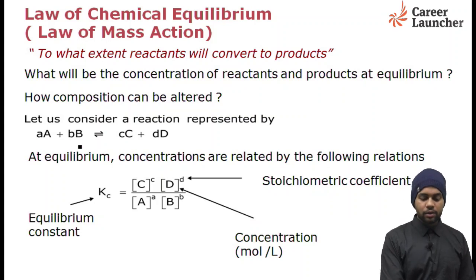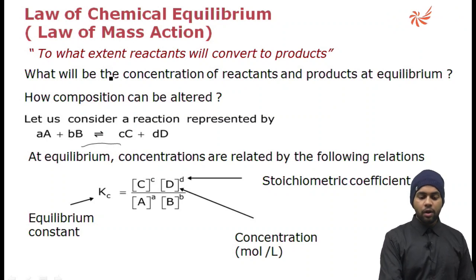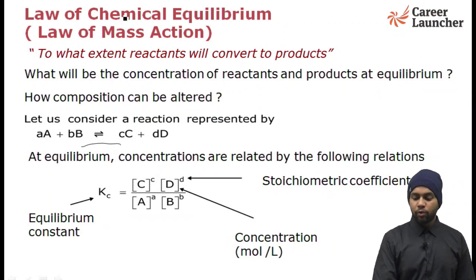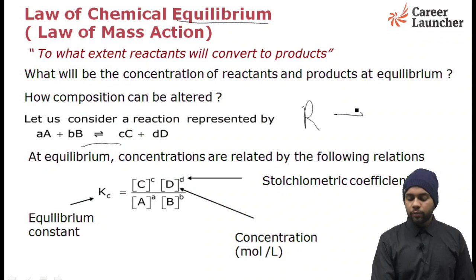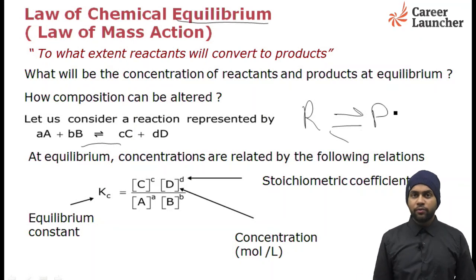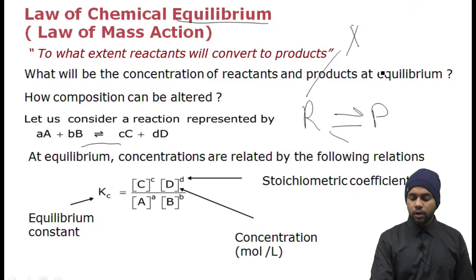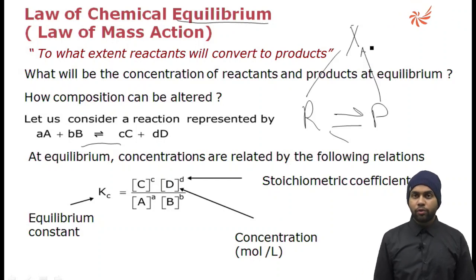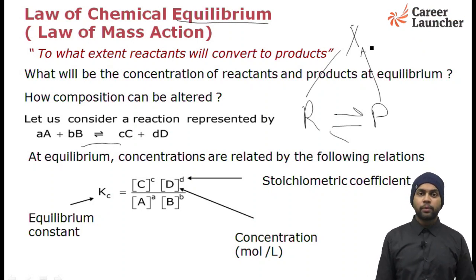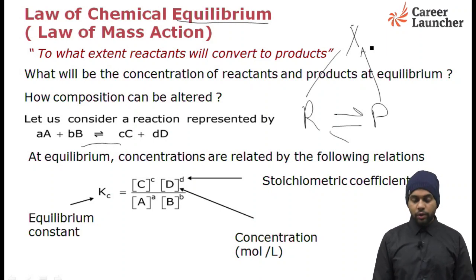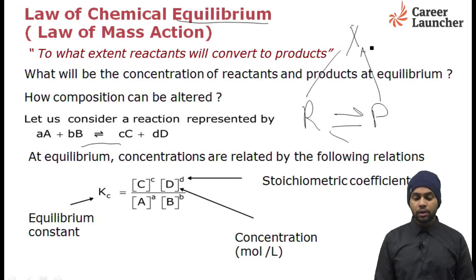Almost every reaction in this world is a reversible reaction. It follows the law of chemical equilibrium — there would be a point of equilibrium where some of the reactant would remain and some of the product has been formed. After this point, the concentration of reactants will not change and the concentration of products will also not change. The reaction might still be going on, with reactants converting to products and some products converting back to reactants, but the net concentrations of neither reactant nor product will change.